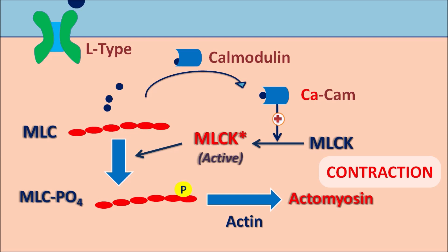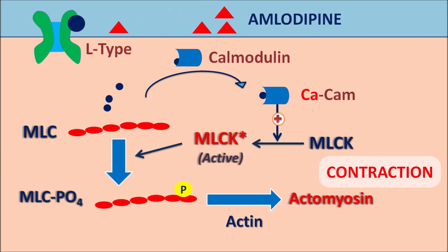These L-type calcium channels also have a dihydropyridine binding site on which amlodipine can bind. Amlodipine interacts with this binding site to inhibit the activity of the L-type calcium channels, just as it does in cardiac muscle. Thereby, it inhibits the contraction of the vascular smooth muscle. These are the two important mechanisms: amlodipine blocks L-type calcium channels, inhibiting contraction of both cardiac and vascular smooth muscle.